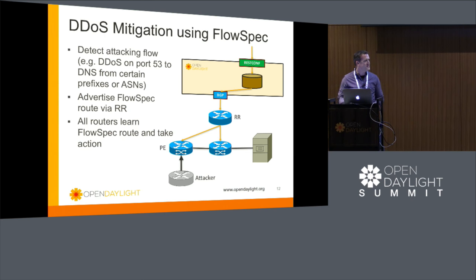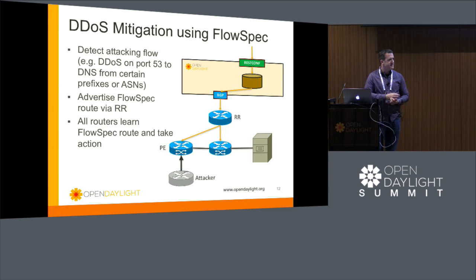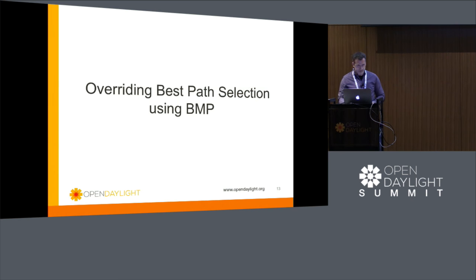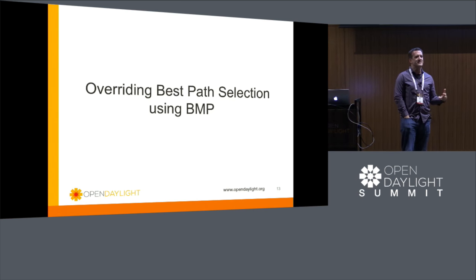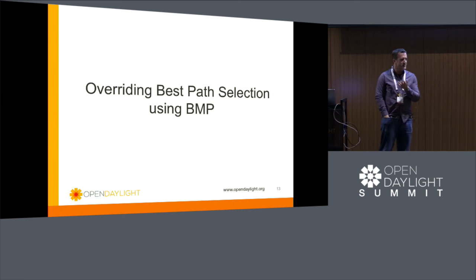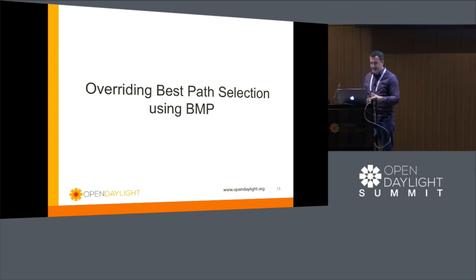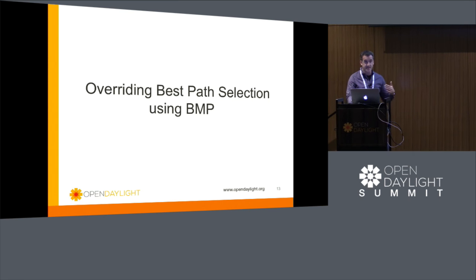FlowSpec isn't just about dropping — you can also do rate limiting and other actions. Questions from the audience: Have carriers deployed BGP FlowSpec? One or two people have looked at it, none confirmed deploying it. I wanted to show a FlowSpec demo but had issues — most of my kit is virtual, and the XRv doesn't support FlowSpec. You can advertise the routes in, but it won't take any action because the forwarding plane is an emulation without that capability.